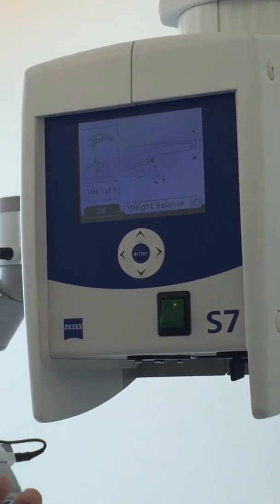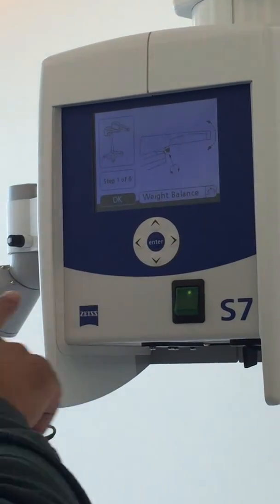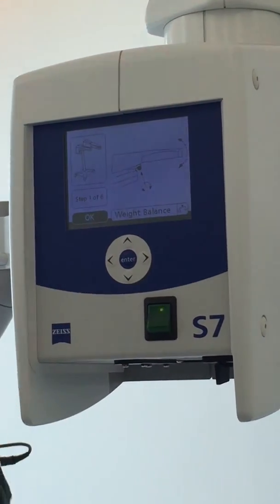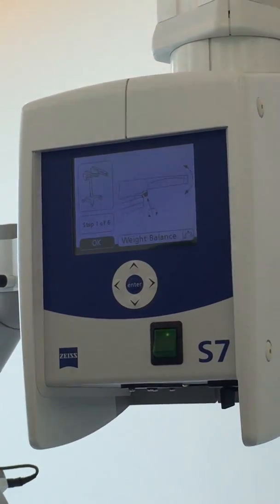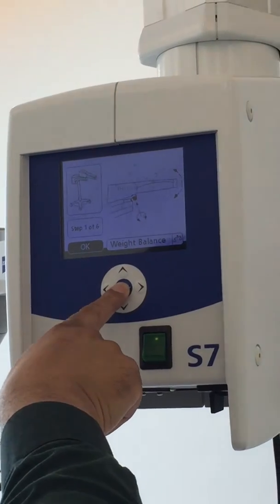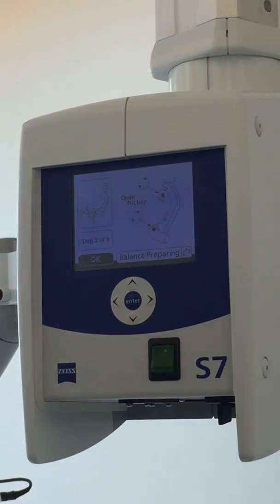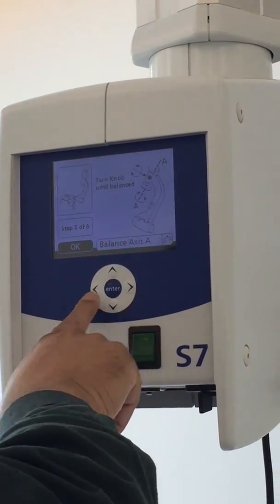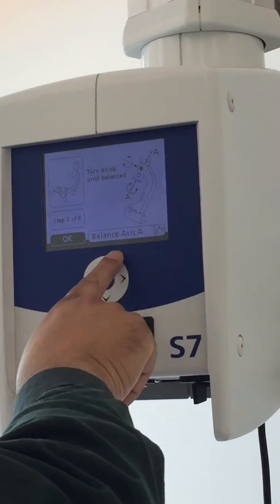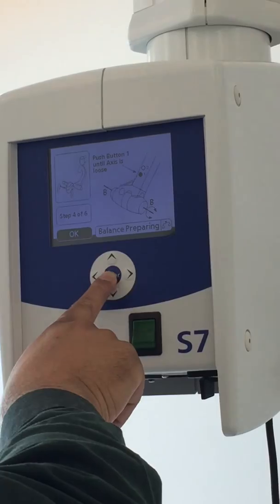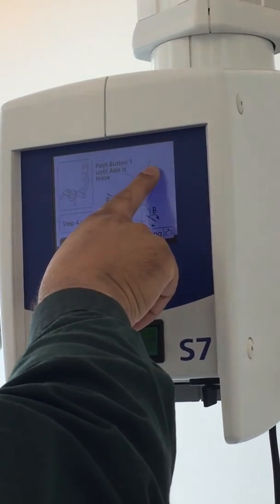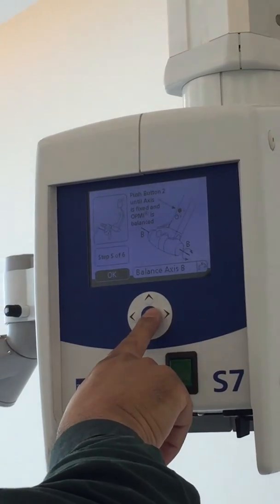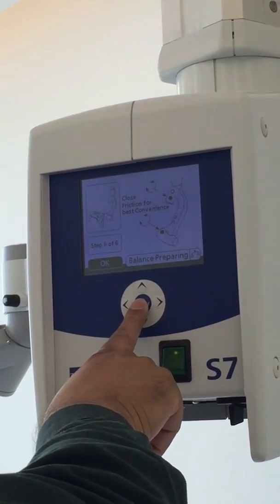This is not automatic balance. It's just giving you the instructions. First, what do you do? You did that balance. So you go and balance it and then you say, okay. Then open the friction knobs. Balance this axis. Step three. Step four. We are pressing axis. Yes. So all the steps are described.